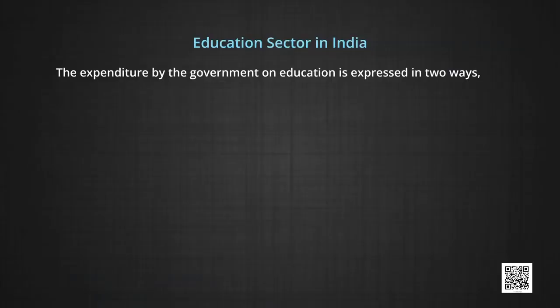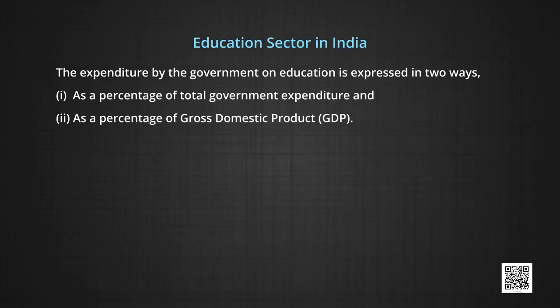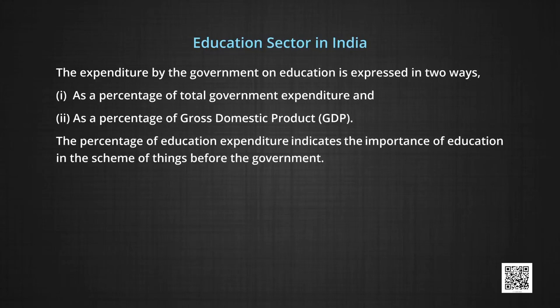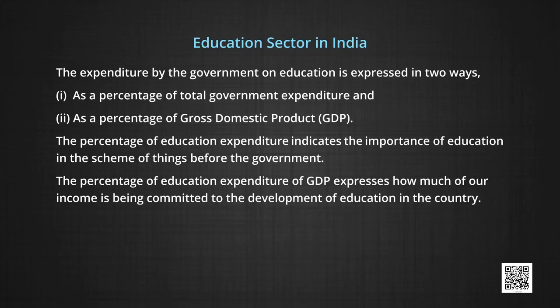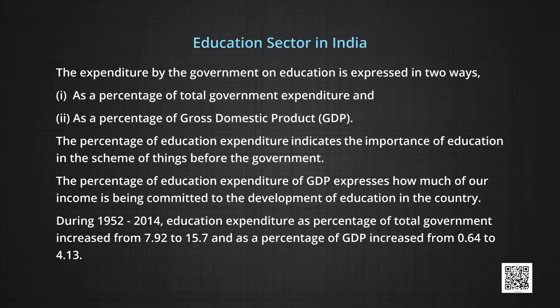Now let us see the education sector in India. Government expenditure on education is expressed in two ways: as a percentage of total government expenditure, and as a percentage of GDP. During 1952 to 2014, education expenditure as a percentage of total government expenditure increased from 7.92 to 15.7, and as a percentage of GDP increased from 0.64 to 4.13. Still, the proportion of public expenditure on education in India remained almost constant for three decades since the early 1950s, and started increasing around the mid-1980s.